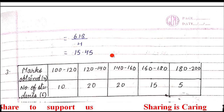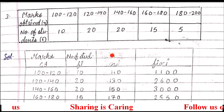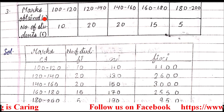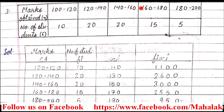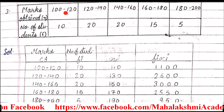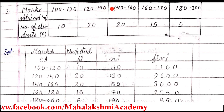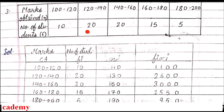Question number 3 is also of the same type, so we will move to question 3. Question 3 is about marks obtained — it is given as grouped data. The first group is 100 to 120, then 120 to 140, and so on. The number of students who obtained marks between 100 and 120 is 10, and between 120 and 140 is 20. These are the number of students who obtained marks within those ranges.